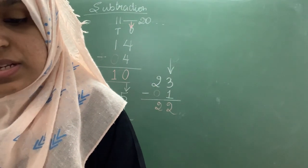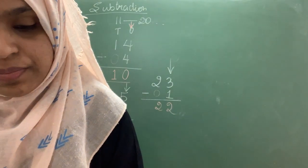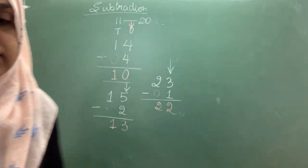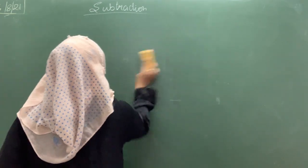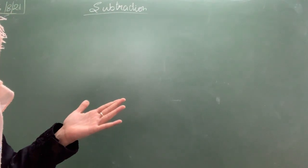Then we will see some subtraction on number line. Now let us see the same subtraction on number line. Now we will write the numbers from 0 to almost 20.